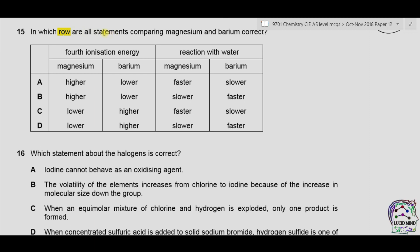Question 15: in which row are all statements comparing magnesium and barium correct? First is fourth ionization energy, second is reaction with water. Magnesium is above barium in group 2. As we move down the group, atomic size increases, so ionization energy decreases — it is easier to remove an electron from a larger atom. Therefore the ionization energy of barium will be lower than that of magnesium. Regarding reactivity with water, reactivity of group 2 metals increases down the group, so barium reacts faster with water than magnesium. The correct answer is B.